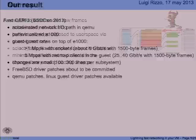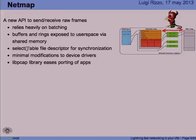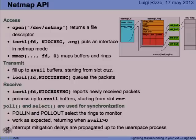Just a little bit of background: NetMap is an API to send and receive raw frames from user space. It relies heavily on batching. Packet buffers and descriptor rings are exposed to user space through shared memory. You have a selectable file descriptor for synchronization. NetMap is implemented with very small modifications to device drivers and a kernel module, and there is a libpcap library exported to applications. In the best case, you don't even need to recompile your application — you just preload our version of the libpcap library and you're using the faster I/O path.